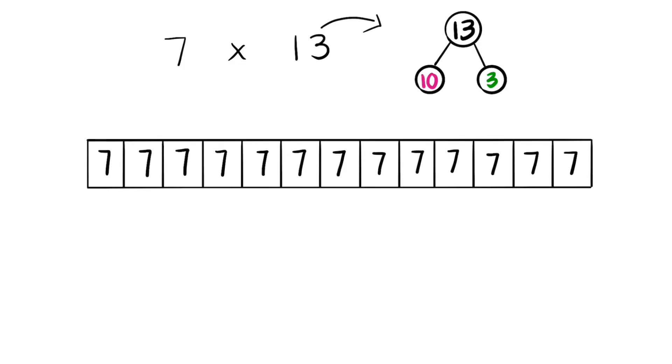Now remember we said we could break it apart into 10 and 3? Well let's go ahead and count 10 sevens first. 1, 2, 3, 4, 5, 6, 7, 8, 9, and 10. We have 7 times 10 here. Let's write that in.